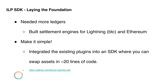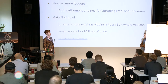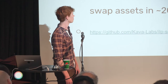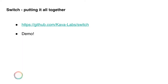There are a couple of pieces to what we built: an ILP SDK and then Switch. The ILP SDK is for moving currencies between each other using ILP — it's simple to use, straightforward to set up, and you don't need to know much about the internals of how Interledger works. Switch is the user interface built on top of the SDK. We're making both open source, just released at kavalab slash switch.